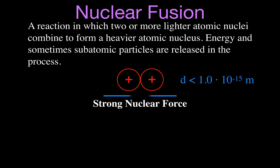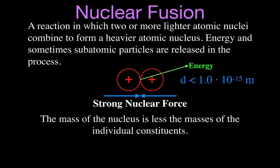When we get them really close, the strong nuclear force is actually a force of attraction. When that occurs, some energy is released — it's that release of energy that powers the sun and all the stars. Where does that energy come from? The energy comes from the fact that the mass of the nucleus formed by the two protons attached together is less than the sum of the masses of those individual protons.